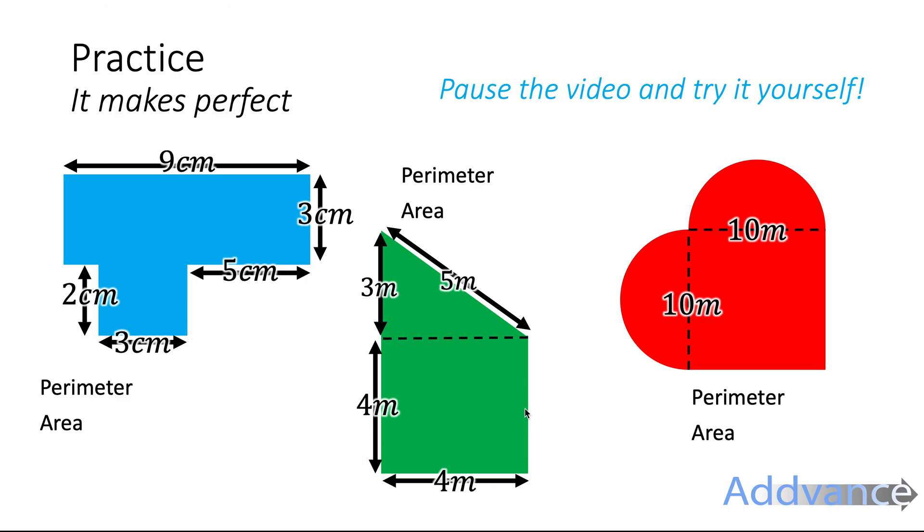This shape over here is a square and a triangle stuck together. Try to figure out the missing side over here. And then we've got a square here with two semicircles stuck to it to make a kind of love heart shape. Try to work out the perimeter and the area by pausing the video now and working it out on pen and paper. You will need a calculator for the circular question because it involves pi.